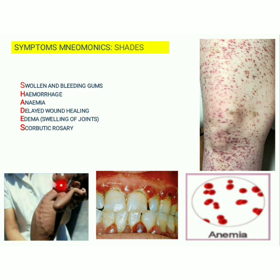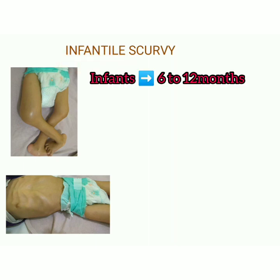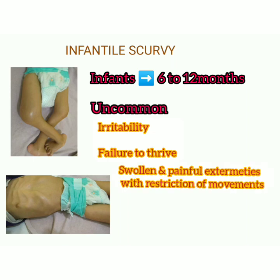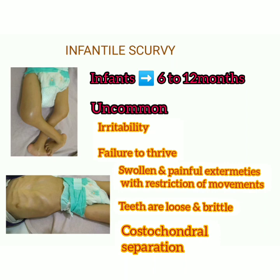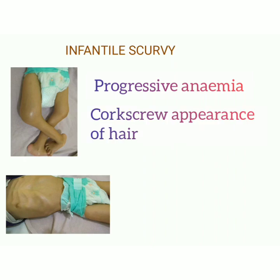Scorbutic rosary is one of the significant conditions of infantile scurvy. It occurs in infants aged 6 to 12 months and is quite uncommon nowadays. Affected individuals present with irritability, failure to thrive, swollen and painful extremities with restriction of movements. Teeth are loose and brittle, and costochondral separation is a typical condition. When the condition worsens, the affected individual presents with progressive anemia, corkscrew appearance of hair, weight loss, anorexia, and eventually death.